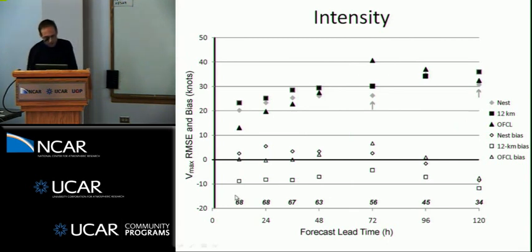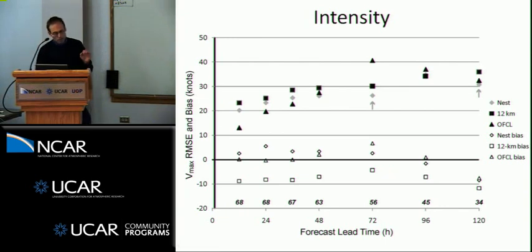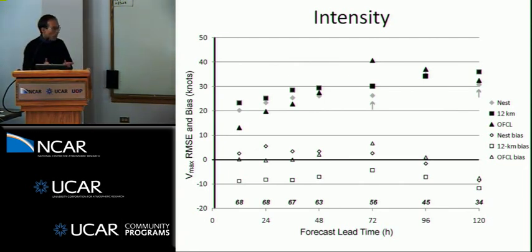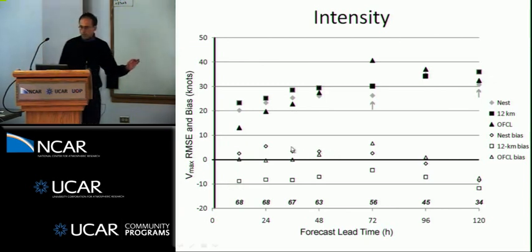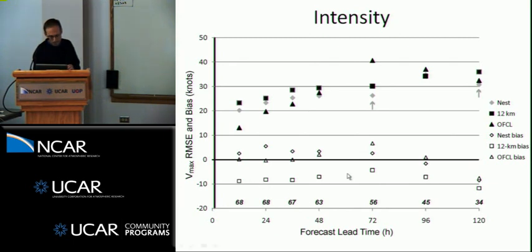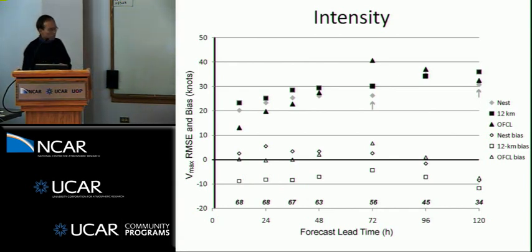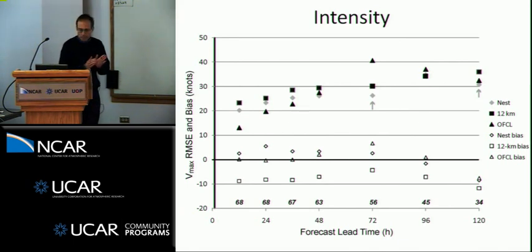Looking at the bias: the coarse-resolution 12-kilometer run has a negative bias of about 5 to 10 knots, which is not surprising since 12 kilometers is marginal for resolving the inner core. The high resolution has a small positive bias of a few knots. These small positive biases come for weak storms, not strong storms, while the negative errors for coarse resolution come for strong storms. So the way errors are manifested is very different in these two systems, and it's not just the dissipation that's going on here.